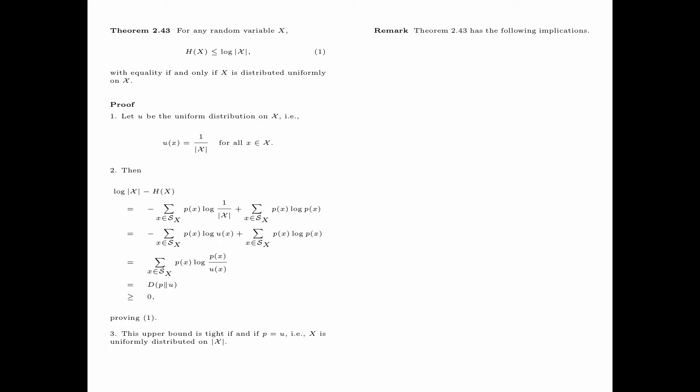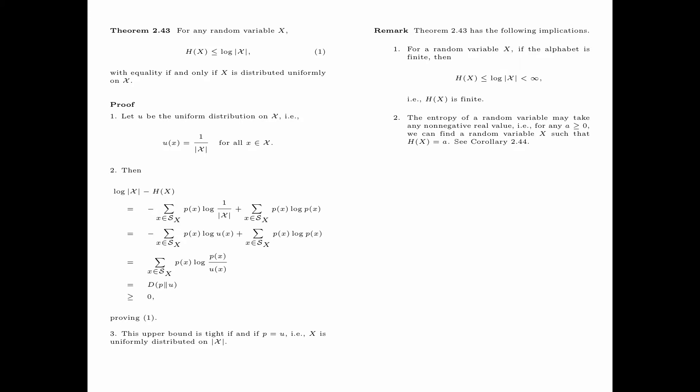Theorem 2.43 has the following implications. First, for a random variable x, if the alphabet is finite, then we have entropy of x less than or equal to the log of the size of the alphabet, which is less than infinity. That is, entropy of x is finite. Second, the entropy of a random variable may take any non-negative real value. That is, for any a greater than or equal to 0, we can find a random variable x such that the entropy of x equals a. For details, please see Corollary 2.44 in the textbook.